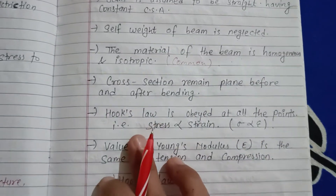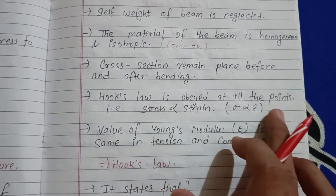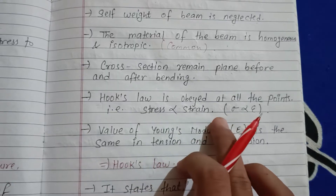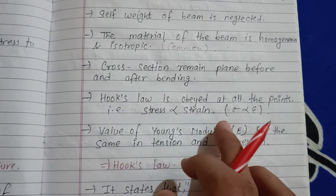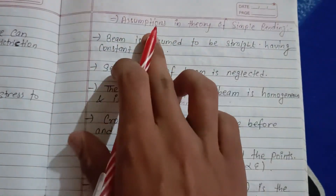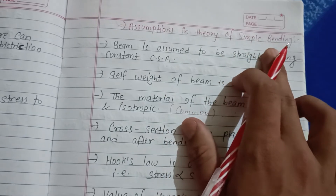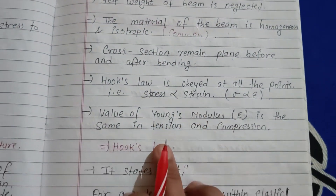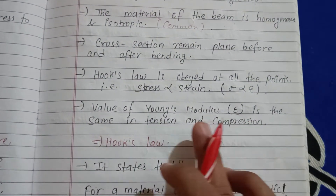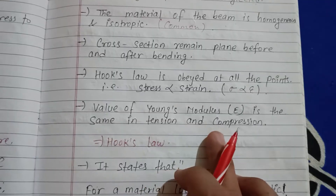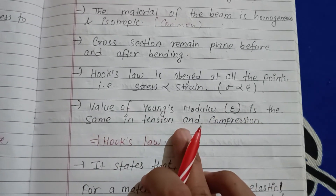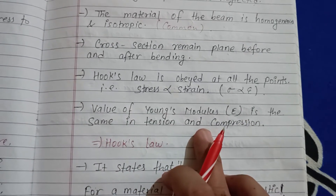Hooke's law is obeyed at all points, meaning stress is proportional to strain. The value of Young's modulus is the same in tension and compression for simple bending.